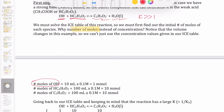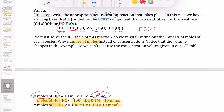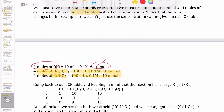The number of moles of OH⁻ is 10 mL × 0.1 M = 1 millimole. The number of moles of acetic acid (the buffer acid component) is 100 mL × 0.1 M = 10 millimoles. The number of moles of conjugate base (acetate) is also 10 millimoles. We need to include the conjugate base because it is a product of the neutralization reaction, and we already have it present in the buffer — so we must account for it.